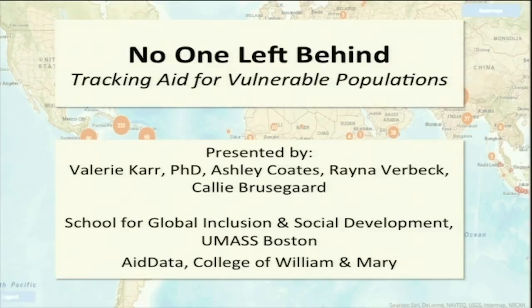For the first section of this presentation, I'll be presenting our research on behalf of UMass Boston and AidData. The title of the study is 'No One Left Behind: Tracking Aid for Vulnerable Populations.' This was a collaborative effort — my name is Valerie Carr, a professor at UMass Boston, and I worked with three PhD students: Raina Verbeck, Ashley Coates, and Kelly Bruce Gard, all from the School for Global Inclusion and Social Development.